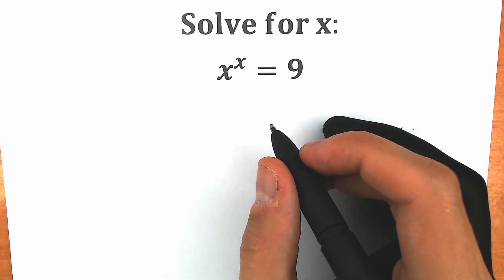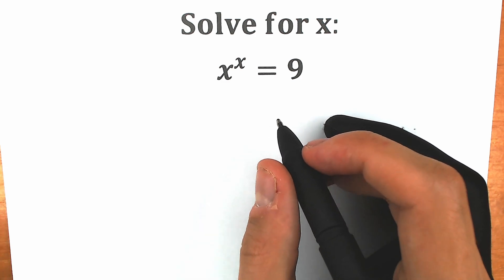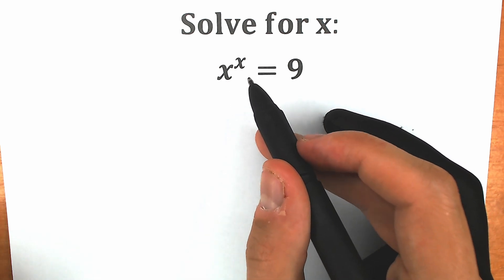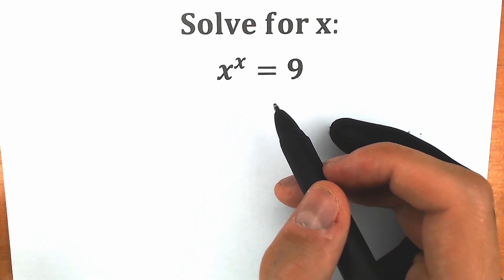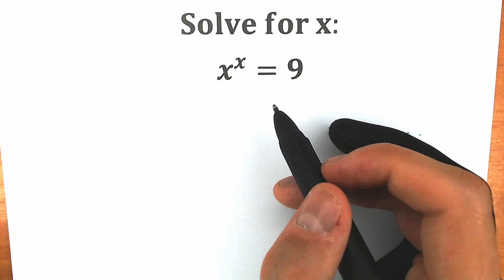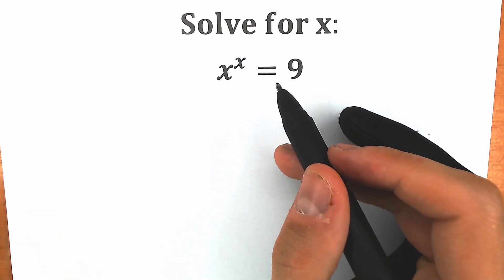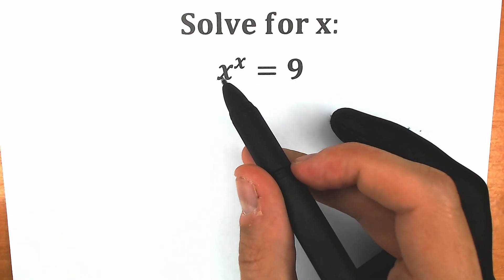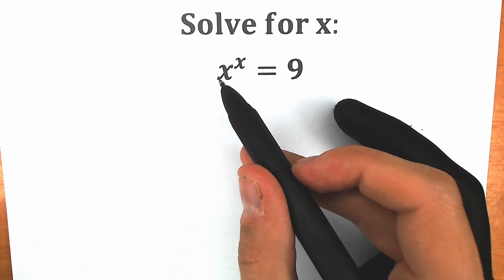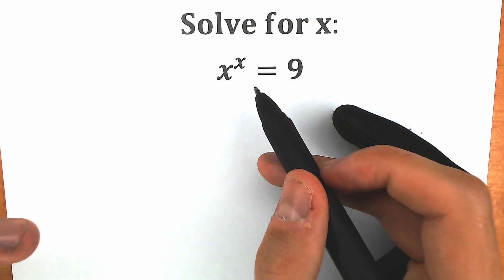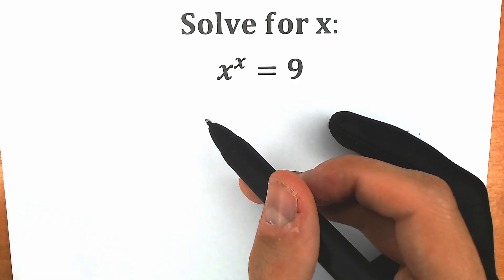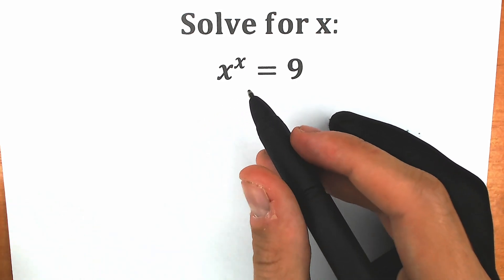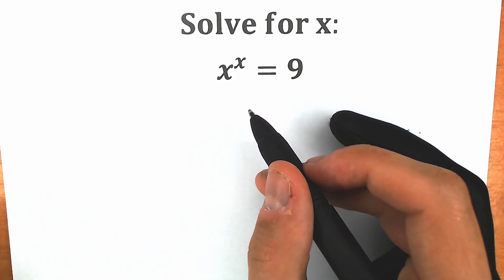Today we have a really interesting, tricky, and at the same time relaxing quick question: x to the x equals 9. A lot of students may be saying, where is the challenge? 3 squared equals 9. But on the left side we have the same base and same exponent, and if we are talking about 3 squared, this is not the same base and same exponent. So we need to find another approach.